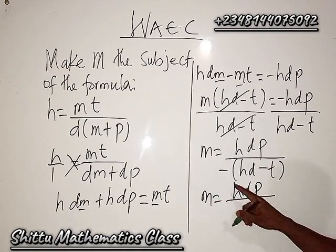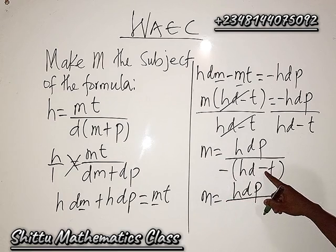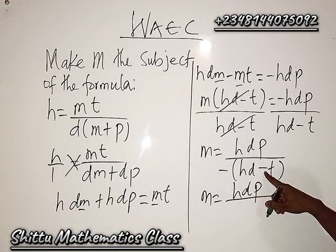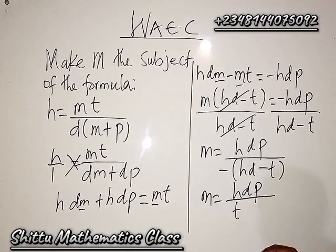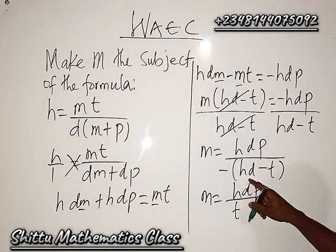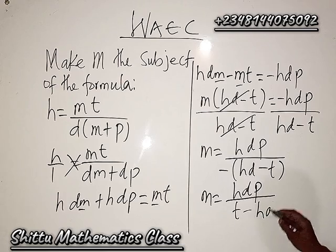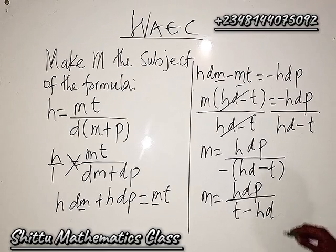So we're going to be having t, and minus times h·d, I'm going to have minus h·d. And that's all. So we have the solution to be m equals h·dp divided by t minus h·d.